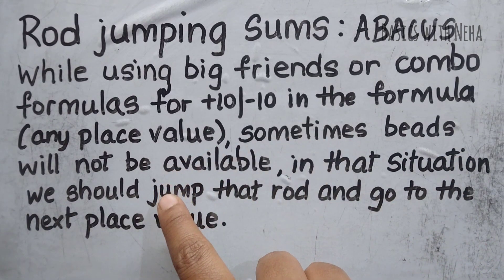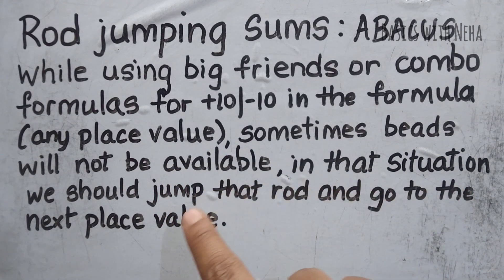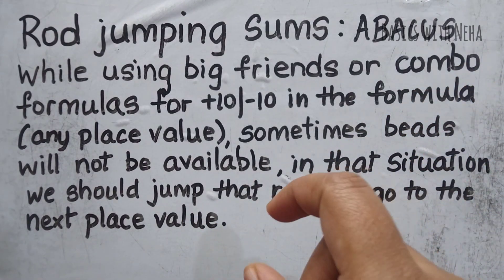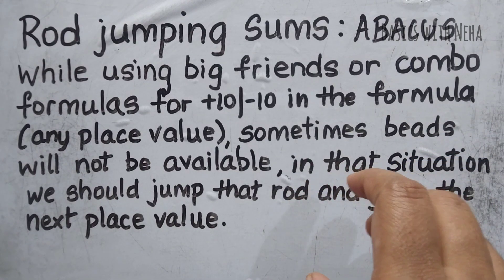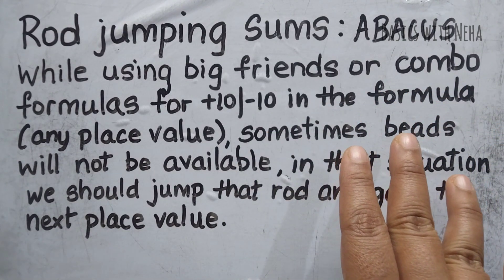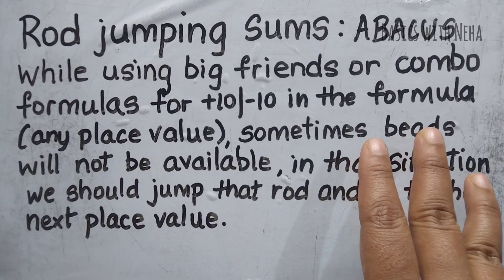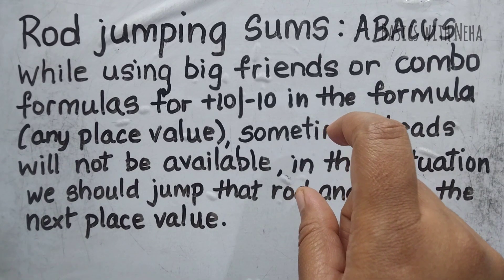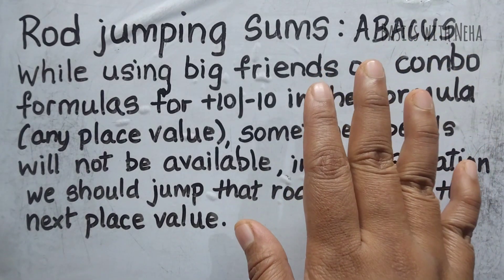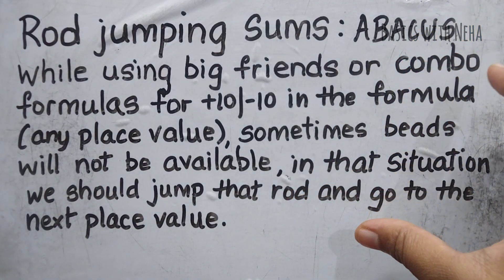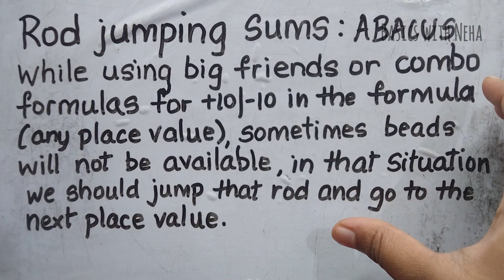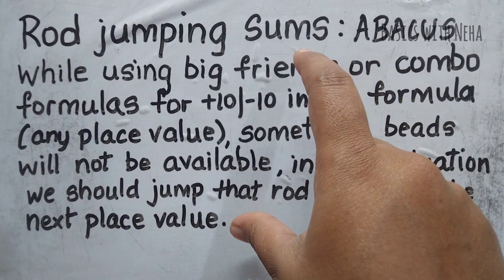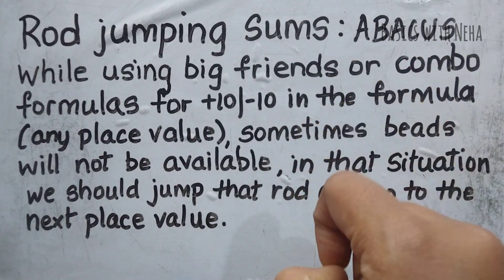In that situation, we should jump that rod and go to the next place value — that means we are going to leave that particular rod and go to the next place value. Is this a different type of sum? Actually no, it's not a different type of sum. This particular method is taught just to reduce the confusion for kids.